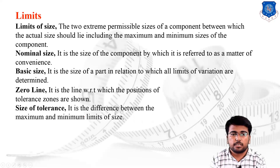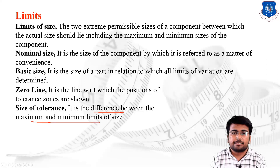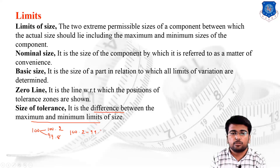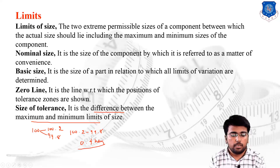The size of tolerance is the difference between the maximum and minimum limit of size. For example, if the diameter is 100 mm and we accept 100.2 mm and 99.8 mm, then the difference between the maximum limit and minimum limit — 0.4 mm — is the size of tolerance.